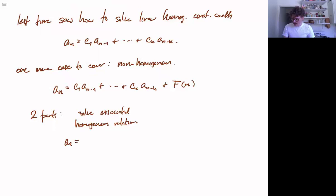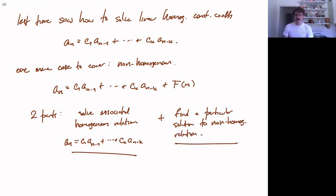Solving the associated homogenous relation, which is what you get when you just ignore the non-homogenous part, essentially. So first part is, wouldn't it be nice if you had a normal linear homogenous equation? So you solve that thing. And the second part is to find a particular solution to the non-homogenous relation. And this part is a little bit trickier, but we will see that in certain cases, there is a good way to do it.